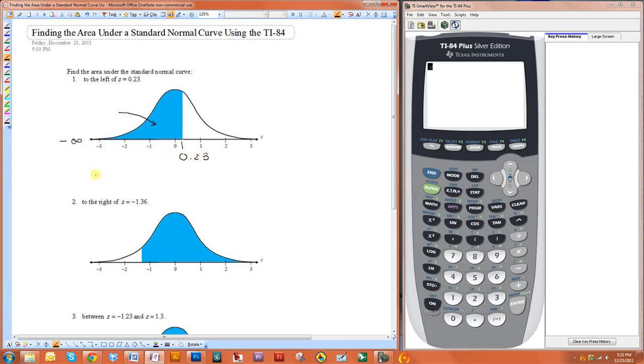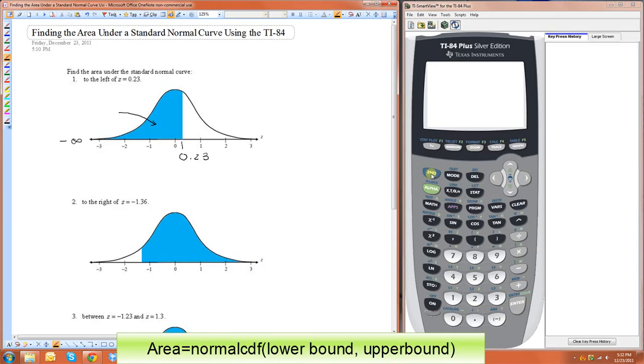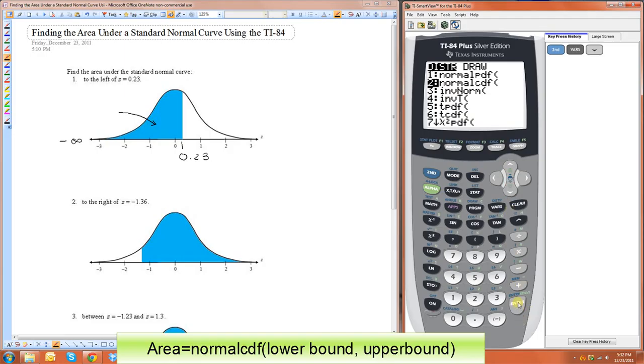To find this, all we need to do is use the normal CDF function in our calculator. We get to that by doing second and then vars. And then normal CDF is number 2, so we press enter.